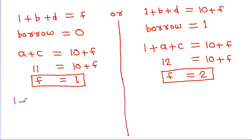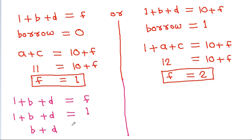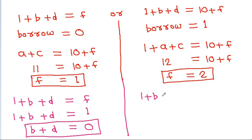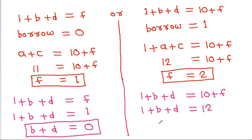In the first case where the carry is 0: 1 plus B plus D equals F equals 1, so B plus D equals 0. In the second case where the carry is 1: 1 plus B plus D equals 10 plus F equals 10 plus 2 equals 12, so B plus D equals 11.